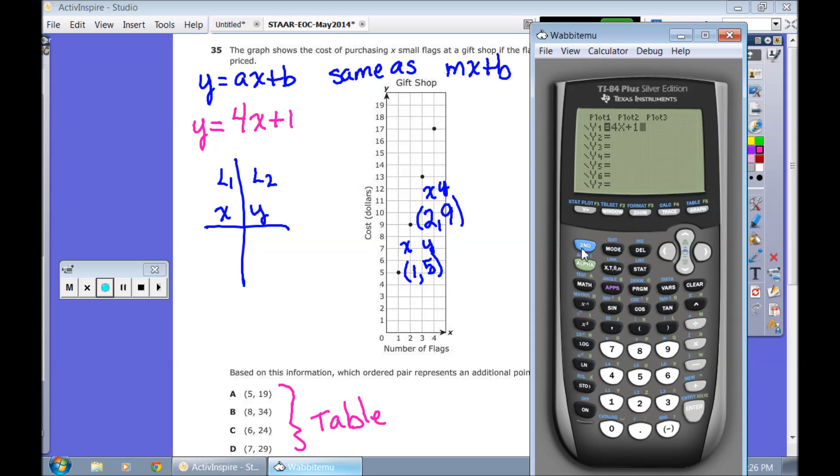Now, yeah, you can extend this out if you wanted to and extend out the x-axis and the y-axis. You can do that. So we go to our table. Let's look. Do we see 5,19? No, I see 5,21. That's not going to work. 8,33? Nope, I need 8,34. That's not going to work. How about 6,24? No, it's 6,25. And if you look, you see 7,29. So 7,29 is actually on this line.